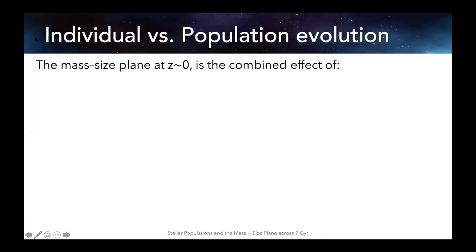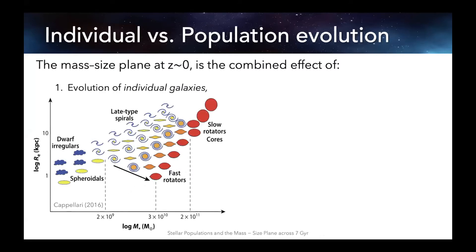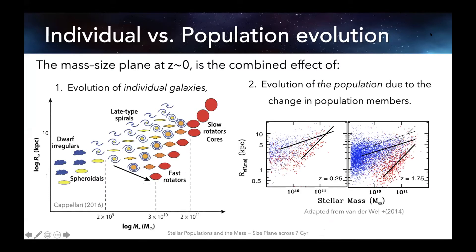When we're looking in the mass-size plane, especially at redshift zero, we're seeing the combined effect of both the evolution of an individual galaxy throughout its lifetime, but also the evolution of the population due to the change in population members. For example, looking at the star-forming sequence, as new galaxies form and as galaxies quench, you have new members added and old members leave. It can be really difficult trying to disentangle what's causing the scaling relations we see at low redshift.